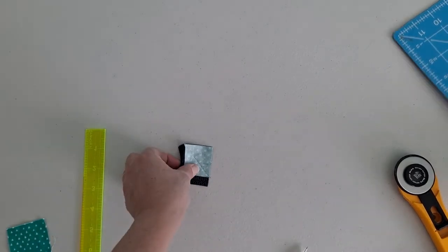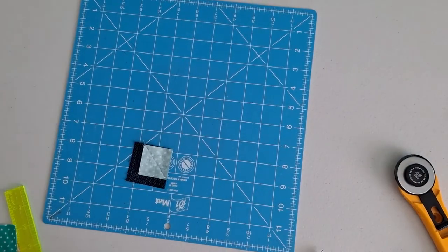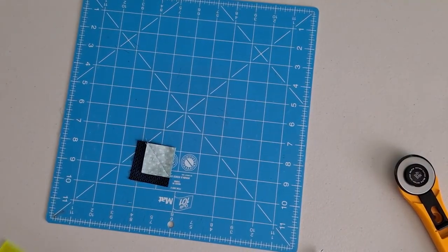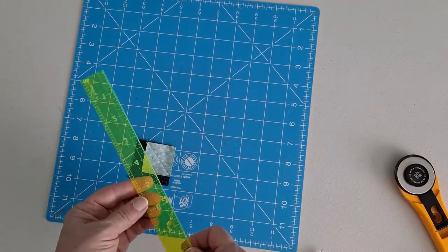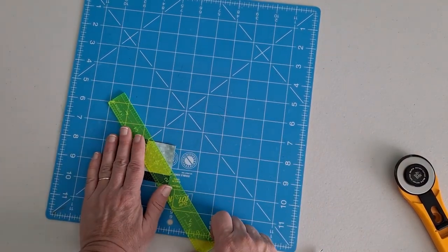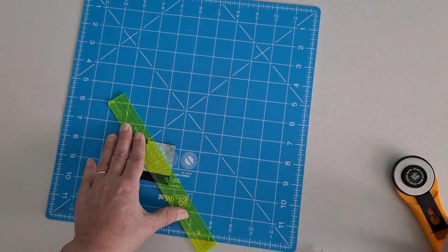And then you're going to trim your seam allowance. If the seam allowance bothers you, you can leave it in. It just adds bulk.